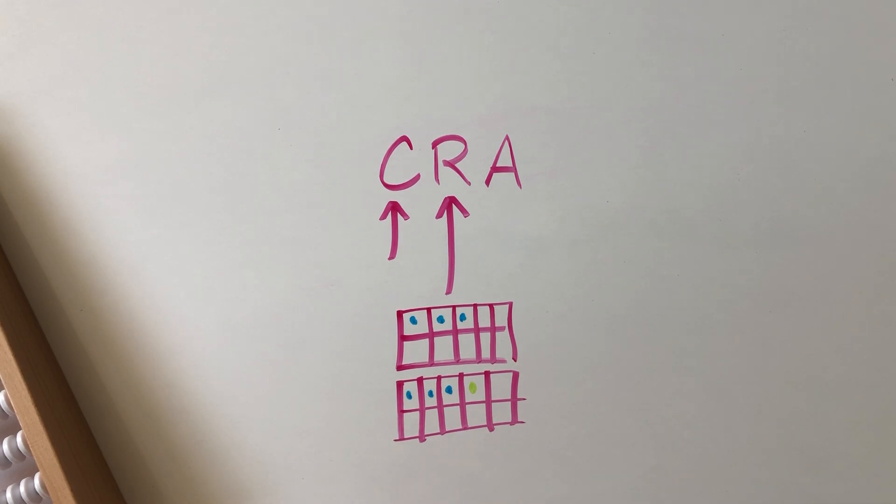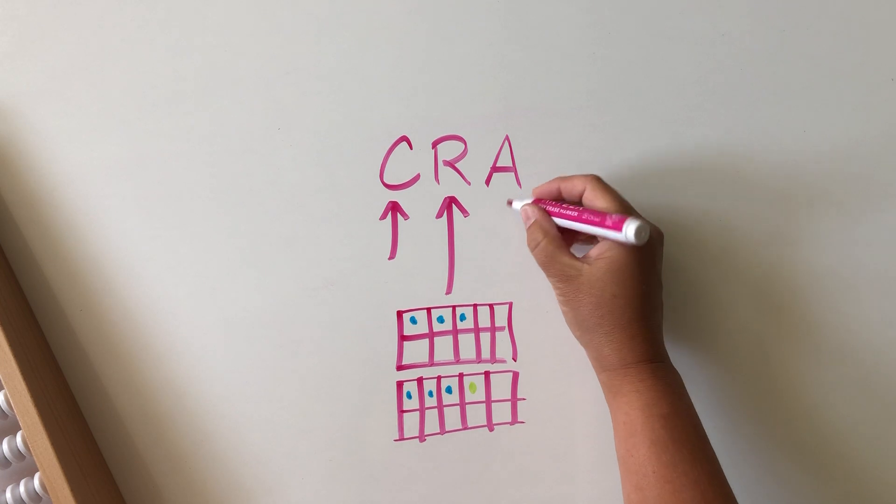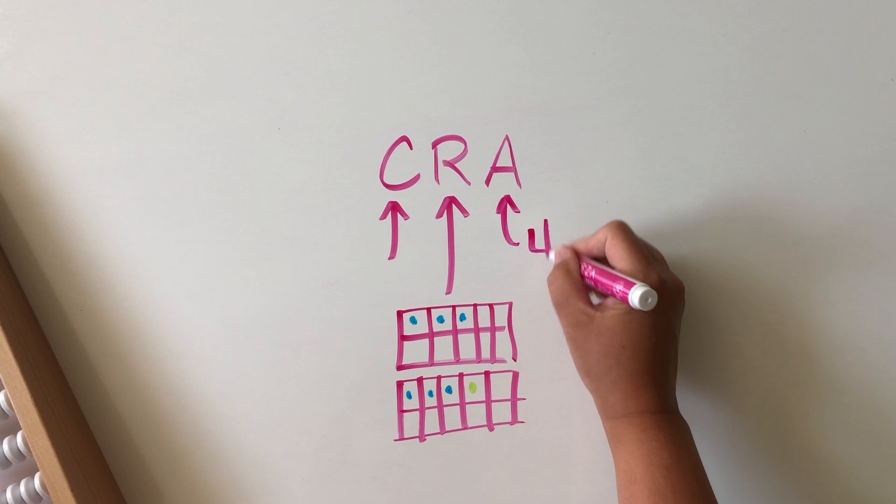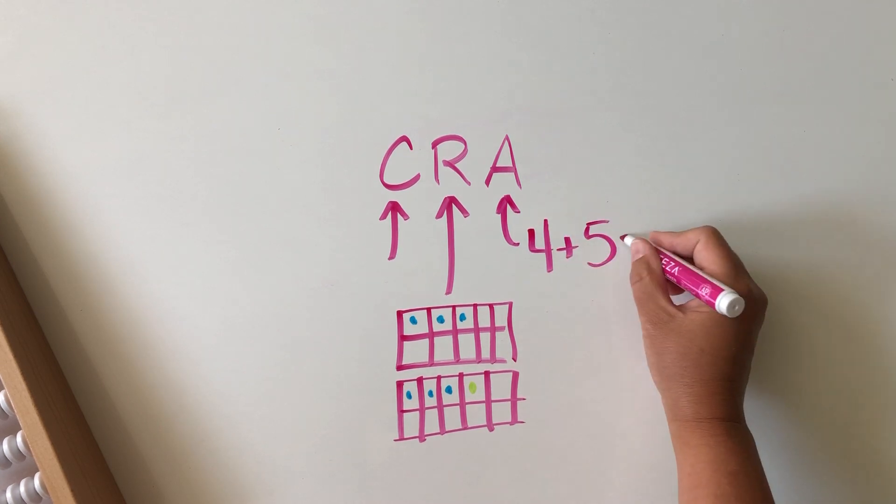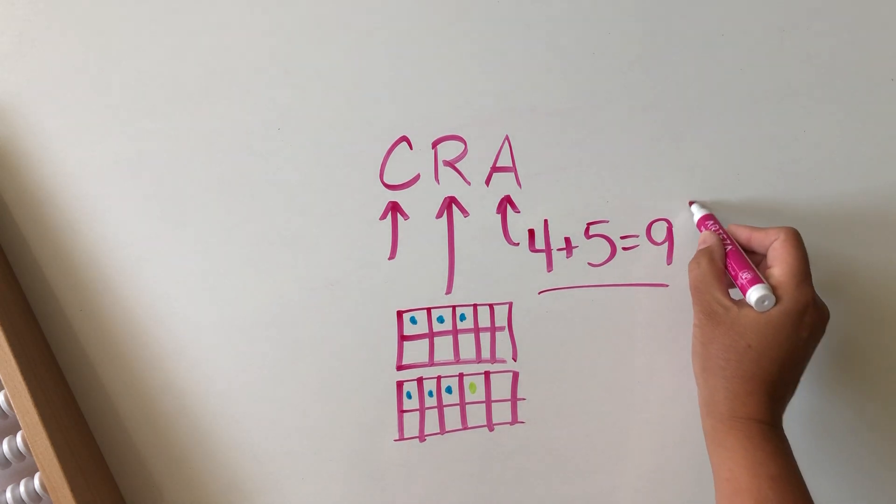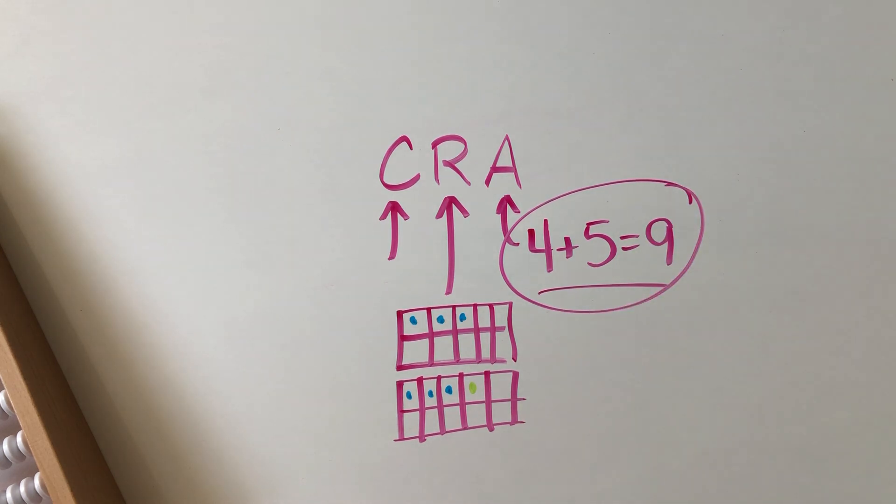And then abstract is when we actually write down the numbers and the symbols. So this is an abstract representation. Too often in math, we want to race to the abstract, right? We see this as the end goal.